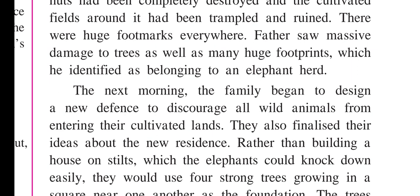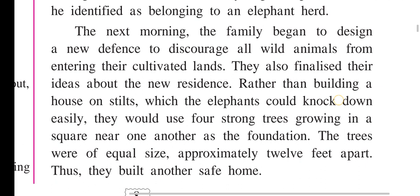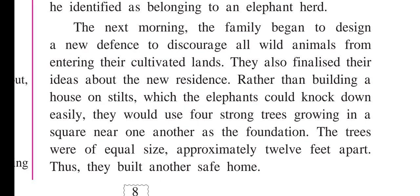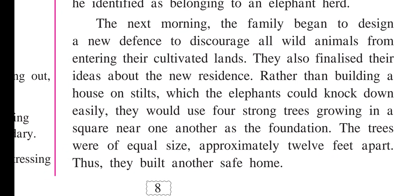The next morning the family began to design a new defense to discourage all wild animals from entering the cultivated lands. Rather than building a house on stilts, which elephants could knock down easily, they would use four strong trees growing in a square near one another as the foundation — the trees were of equal size, approximately 12 feet apart. Thus they built another safe home, elevated in the trees and protected from wild animals.